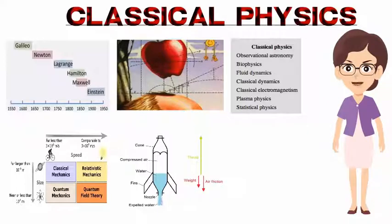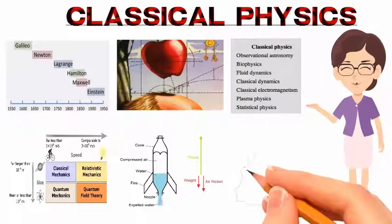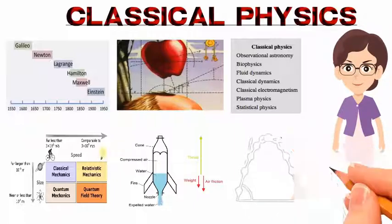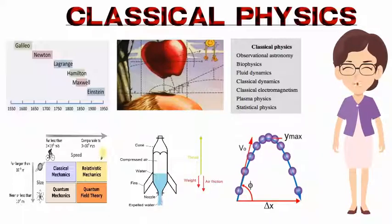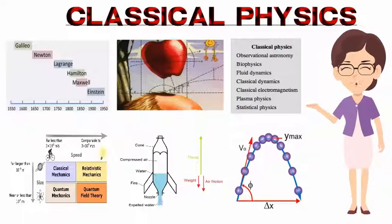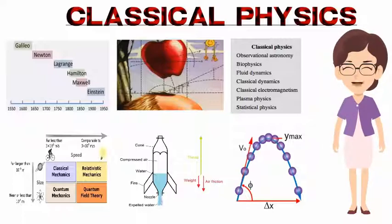Classical physical concepts are often used when modern theories are unnecessarily complex for a particular situation. Most usually classical physics refers to pre-1900 physics, while modern physics refers to post-1900 physics, which incorporates elements of quantum mechanics and relativity.